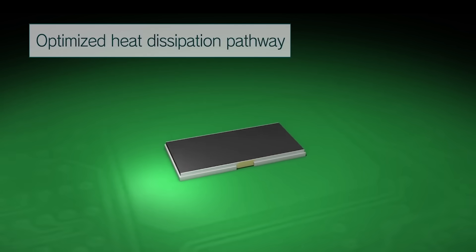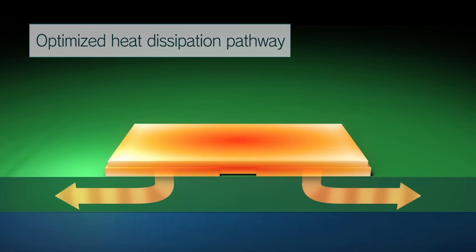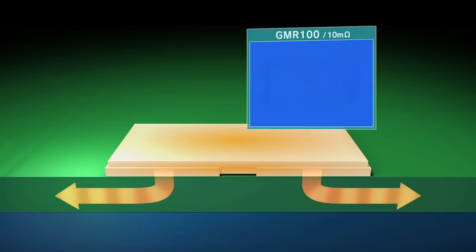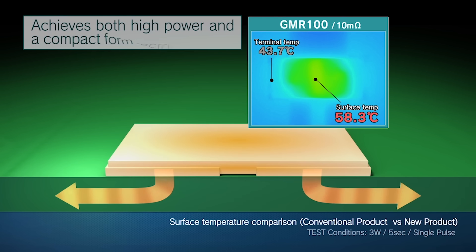The GMR series achieves low surface temperatures during operation by adopting an optimized heat dissipation package structure. This results in excellent heat dissipation performance, simultaneously meeting the needs for high power up to 4 watts and a compact 5 by 2.5 millimeter squared form factor.